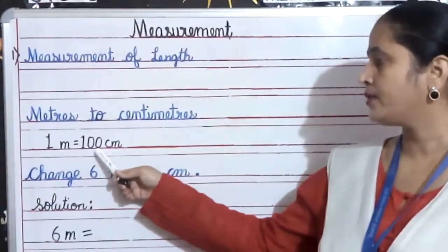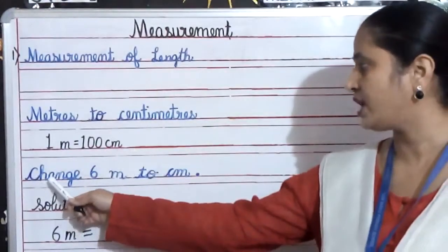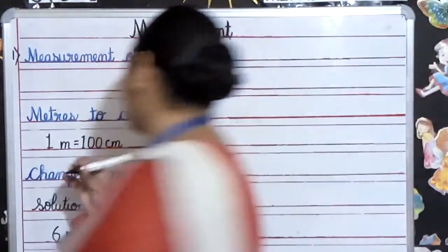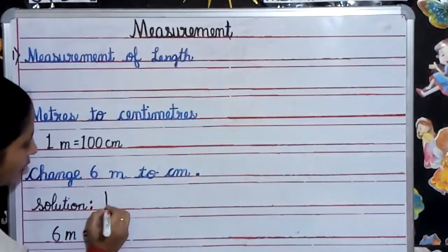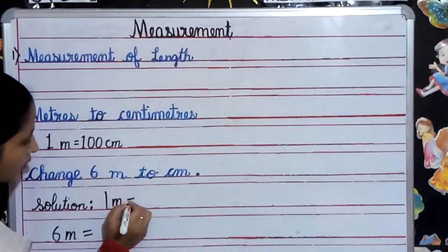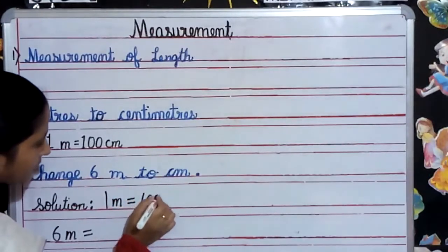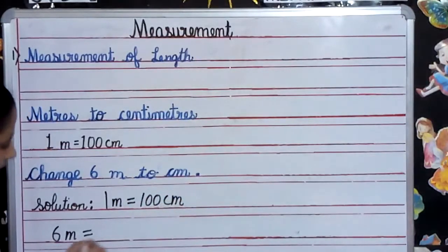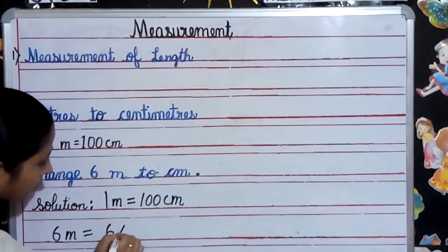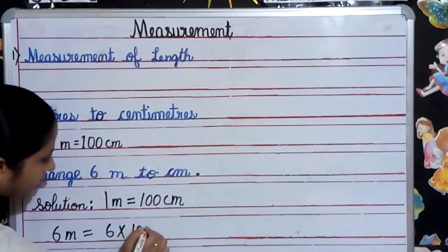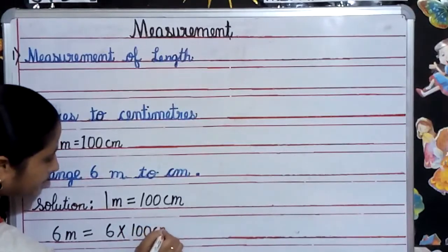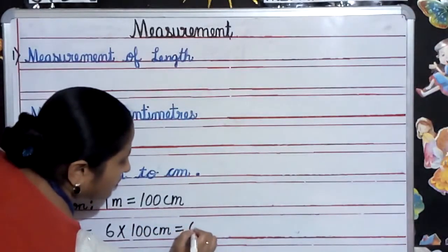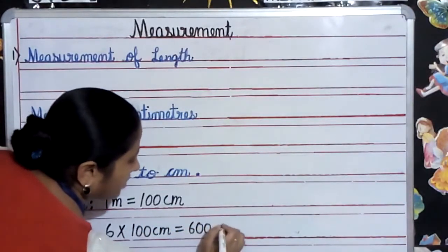1 meter equals 100 centimeters. Here we have to change 6 meters to centimeters. Solution: 1 meter equals 100 centimeters. So 6 meters equals 6 multiplied by 100 centimeters.